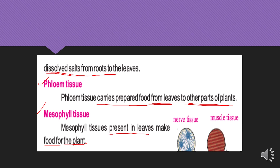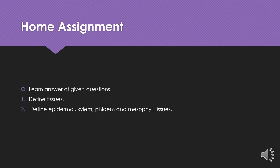These are the four major plant tissues we discussed today. For your home assignment, you need to define tissue, and then define each of the four tissues: epidermal tissue, xylem tissue, phloem tissue, and mesophyll tissue.